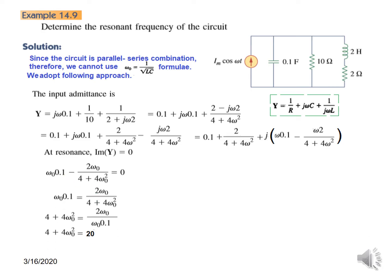By manipulation—I hope you can follow this—ω₀ comes to be 2 radians per second. So this is how you solve series-parallel problems to find the resonant frequency. Let's see the practice problem.